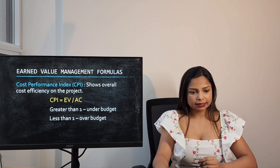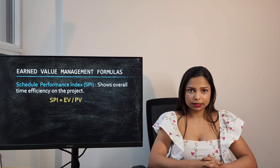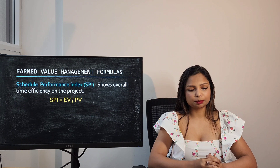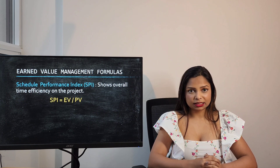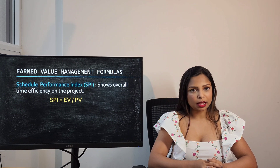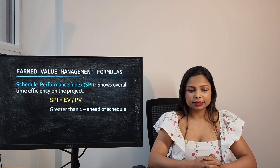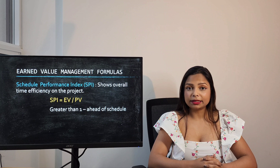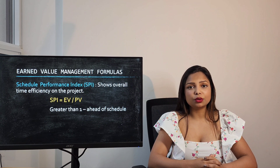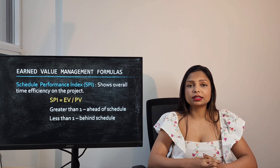Schedule Performance Index, or SPI, shows the overall time efficiency of the project. To calculate SPI you divide Earned Value by Planned Value. If the SPI is greater than 1 your project is ahead of schedule, but if it is less than 1 your project is behind schedule.